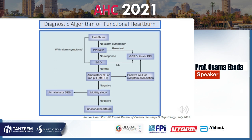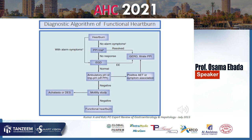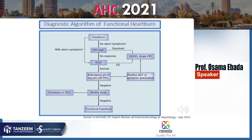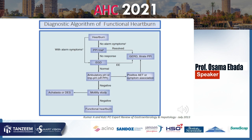The algorithm for functional heartburn: if there are no alarm symptoms, try a PPI trial. If response occurs, it is GERD. If no response, proceed to endoscopy. If endoscopy is negative, perform ambulatory pH off PPI. If there is positive symptom association index or acid exposure time, it is NERD. If negative, do a motility study. If positive — achalasia or diffuse spasm. If motility is also negative, it is functional heartburn.